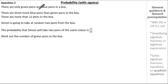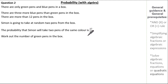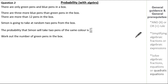Here the question states there are only green pens and blue pens in a box. There are more blue pens than green pens, and there are more than 12 pens in the box. Simon is going to take at random two pens from the box, and the probability that Simon will take two pens of the same colour is 27 over 55. We're asked to work out the number of green pens. See if you can give it a go — remember to form your algebraic expressions, use the AND or OR rule, and apply your skills in simplifying and solving algebraic fractions.